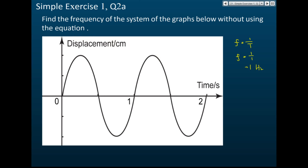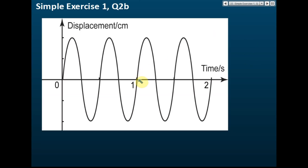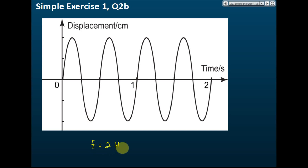For the next graph (Q2b), what is the frequency without using f = 1/T? From 0 to 1 second, you can count 2 complete oscillations. Two complete oscillations in 1 second means the frequency equals 2 Hz.